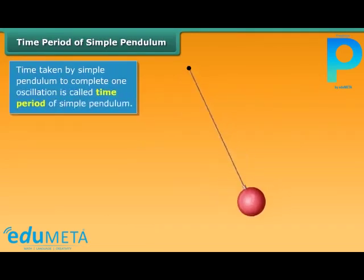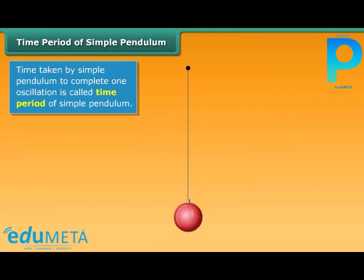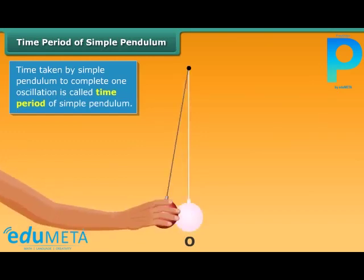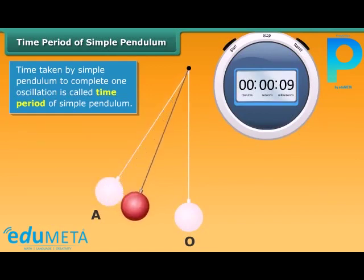The time taken by the pendulum to complete one oscillation is called its time period. You can compute it with the help of this simple exercise. Take a simple pendulum, let it come to rest, identify the equilibrium position O on the ground below. Now take the bob to one extreme position A and identify it on the ground below.